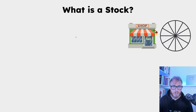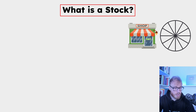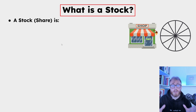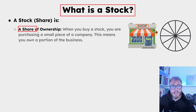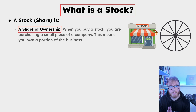Now let's take a look at some stock market basics. The very first question we have to ask ourselves is: what is a stock? In very simple terms, a stock — or in other words, a share, these two words are used interchangeably — is basically a share of ownership. So when you buy a stock, you are basically buying a small piece of a company or business, meaning you are the owner of a small piece of that company.